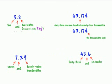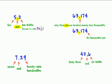Now when you read decimals, you have to remember that the decimal point is always read as 'and.' In every one of these, the decimal point is 'and.' Always say 'and' for the decimal point.